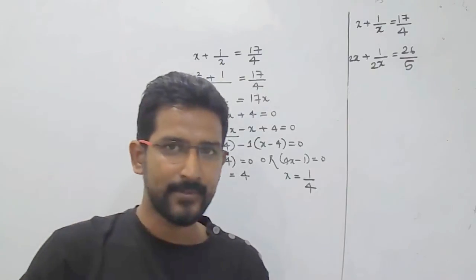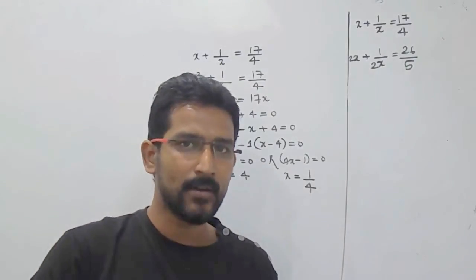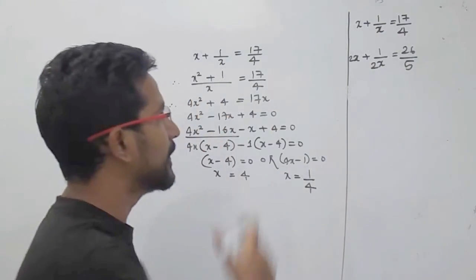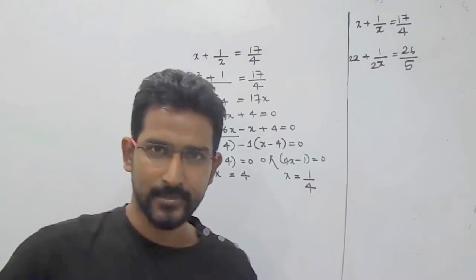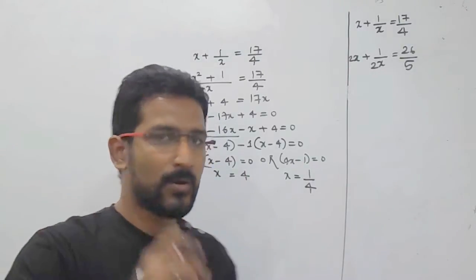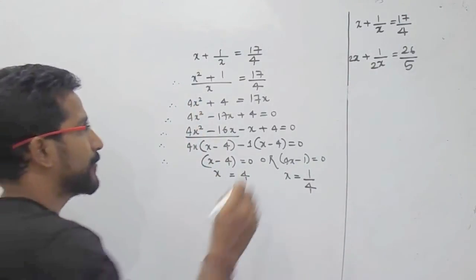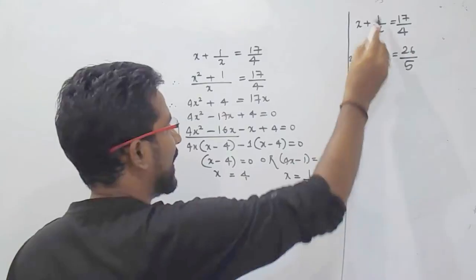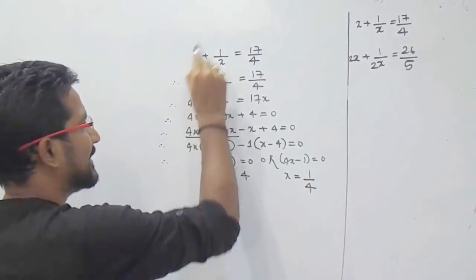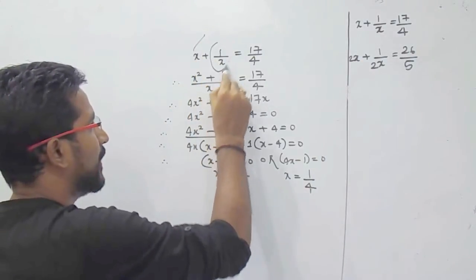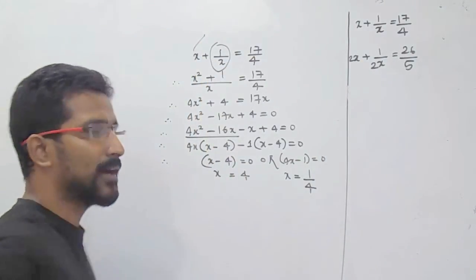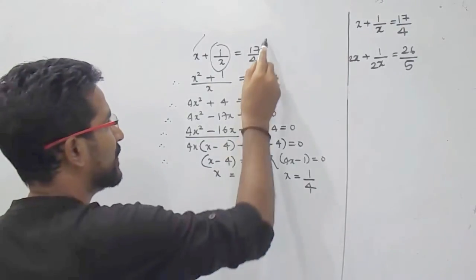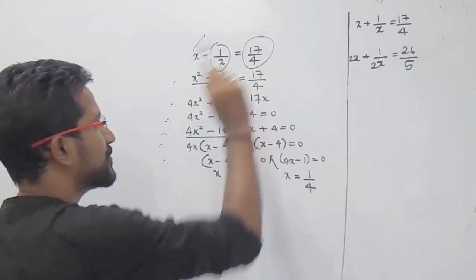But by the trick we are going to discuss here, we are going to get the answer just by looking at the question. The first condition we have to check is that the terms are in reciprocal form — that is, x and 1 upon x are reciprocal of each other. And on the right hand side, we have 17 by 4.